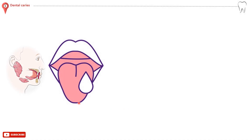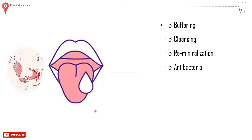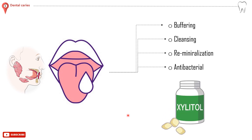Saliva acts as an intraoral antacid due to its alkaline pH at high flow rates and buffering capacity. It also decreases plaque accumulation and aids in clearing foodstuffs. It acts as a reservoir of calcium, phosphate, and fluoride ions, thereby favouring remineralization. It has an antibacterial action because of its immunoglobulin A, lysozyme, lactoferrin, and lactoperoxidase content. Chewing sugar-free gum regularly after meals stimulates saliva production. Xylitol helps to reduce tooth decay as it stops the production of tooth decay-causing acid and neutralizes the pH level in the saliva and plaque, and it does appear to decrease caries, but the reduction is small.